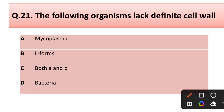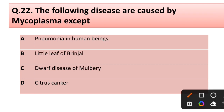...options continued: (c) both A and B, (d) bacteria. Correct answer is option C: both A and B — Mycoplasma and L-forms. Question number twenty-two: the following diseases are caused by Mycoplasma except — options: pneumonia in human beings, little leaf in brinjal, grape disease of mulberry, citrus canker.